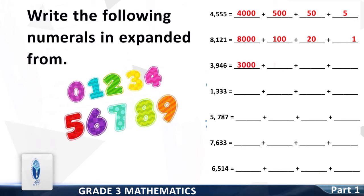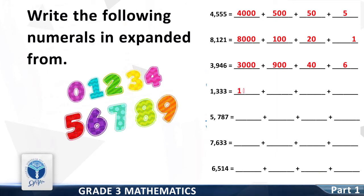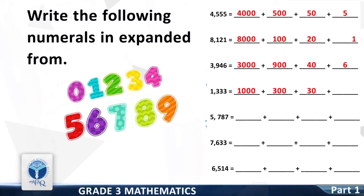Now we move to the next number: 3,946. Write the first expanded form: 3,000. Next: 900. Next: 40. Next: 6. Now move to the next question: 1,333. First expanded form: 1,000. Next: 300. Next: 30. Next: 3.